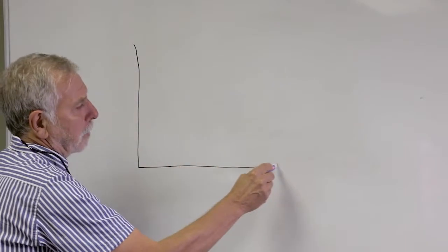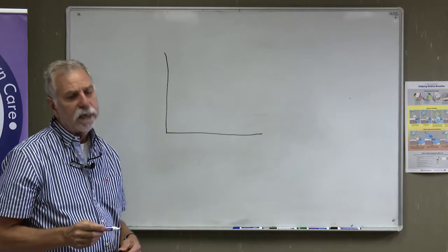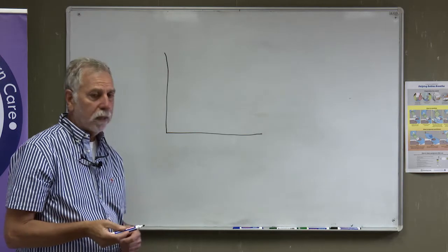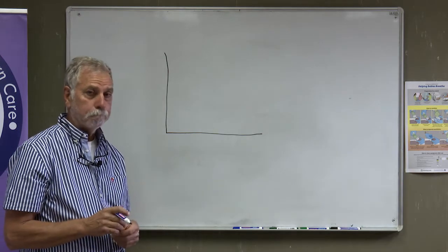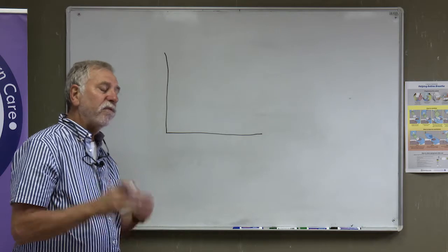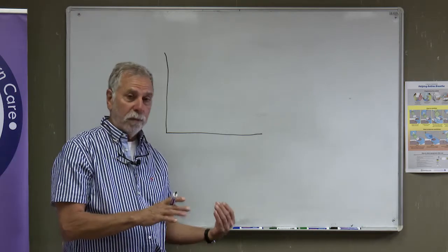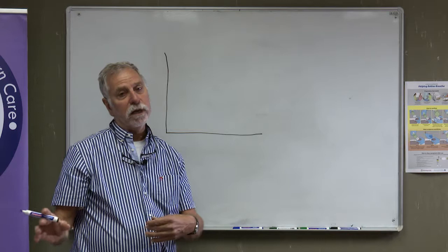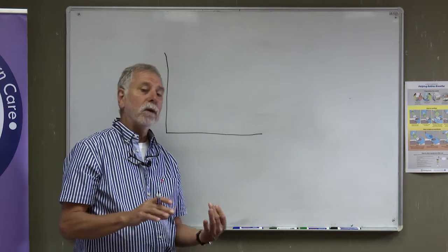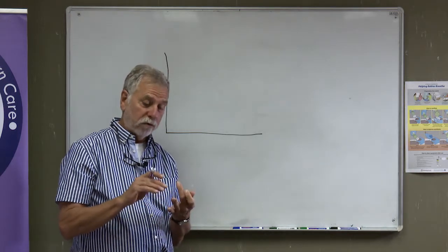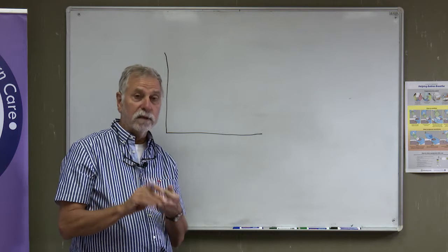So what they did, they did in near term monkeys, they did a C-section. And before they let their babies be born, they put in a catheter in the umbilical artery to measure blood pressure and to measure heart rate and be able to take blood samples.